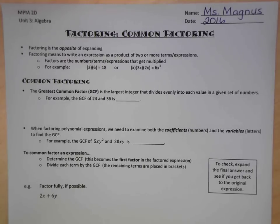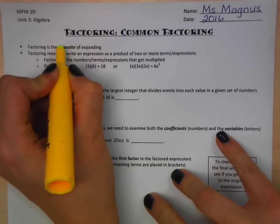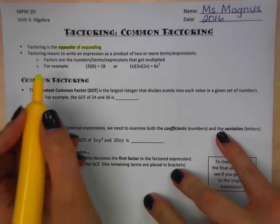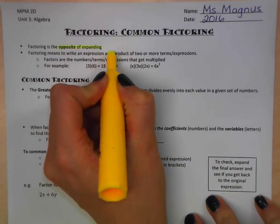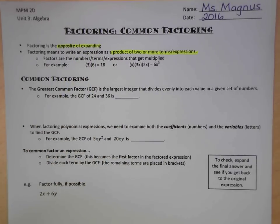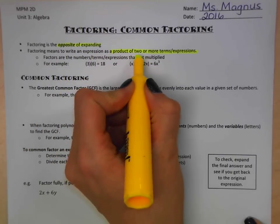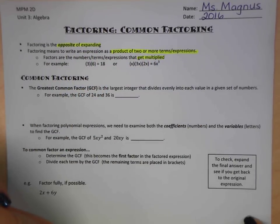Today we're going to be talking about common factoring. Factoring in general is maybe a word you haven't heard before, but it's basically the opposite of expanding, which means we're going to find an expression as a product of two or more terms or expressions. Remember, product means they are talking about things that are multiplied together.